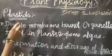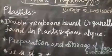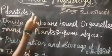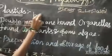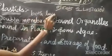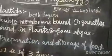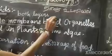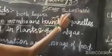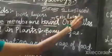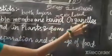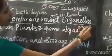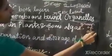Dear children, write down the meanings. Double membrane — both layers. Bound — which means enclosed. Organelles — group of organs.